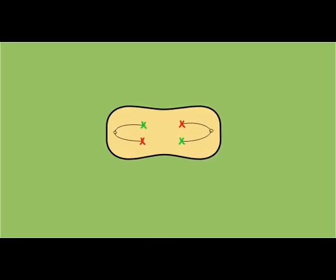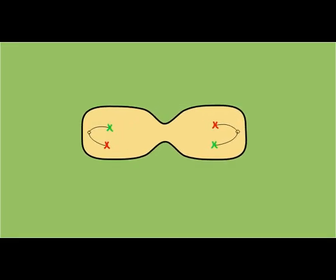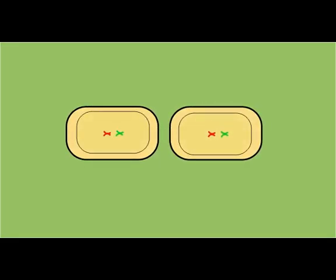The first cell division is similar to that of mitosis. The membrane disappears and the spindles come out and attach to the chromosomes and take them into the new cells. Unlike mitosis though, there is another division.